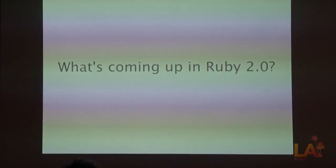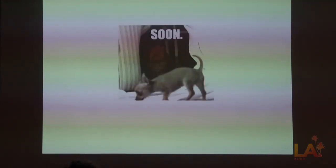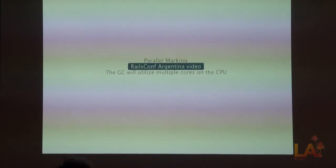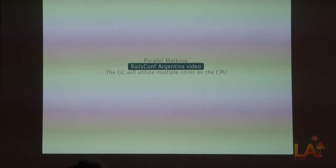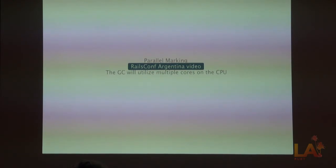That was Ruby 1.9.2 and 1.9.3. What's coming in Ruby 2.0? There's going to be parallel marking. Right now the garbage collector not only stops the world but runs in a single thread. Naruhiro — he's a hero — is working on parallel marking, which will utilize multiple cores. Garbage collecting will be parallelized. He does some crazy thing where he branches sections of memory and marks them. Please watch the RailsConf Argentina video — it's online. He also has a really cool story about how he used to work at an ice cream factory making cardboard boxes before getting into programming.